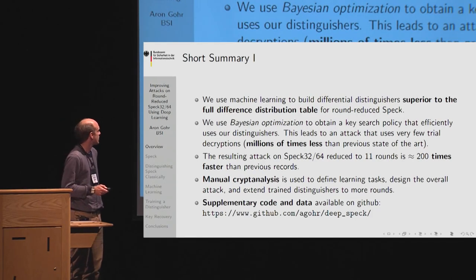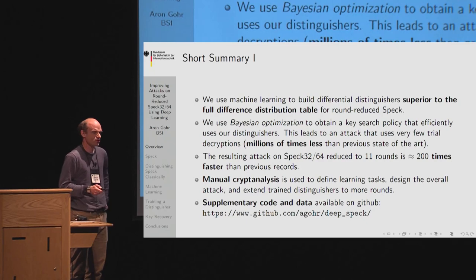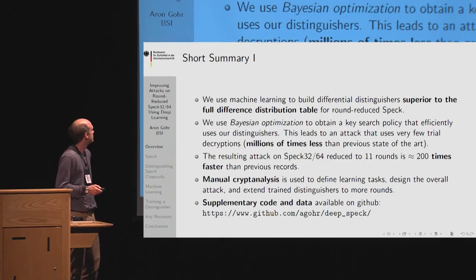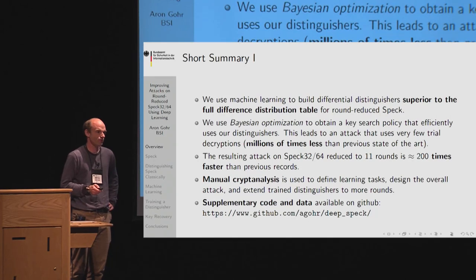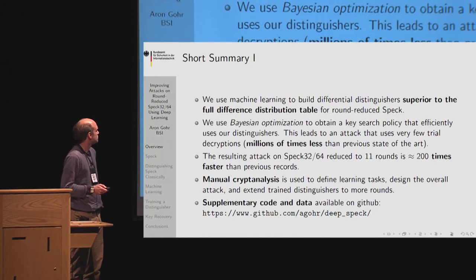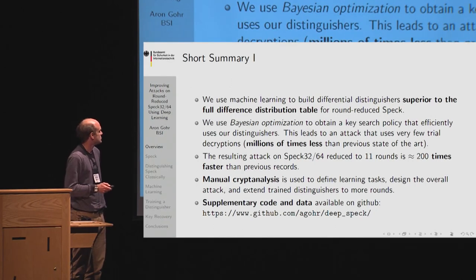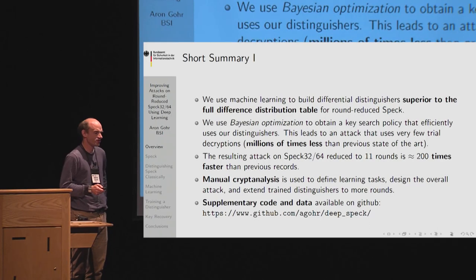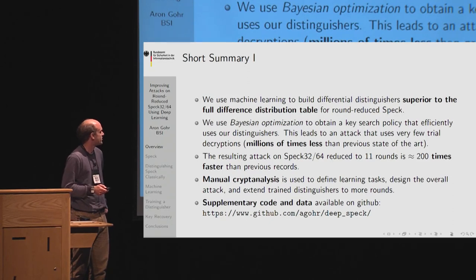The first thing we do is build differential distinguishers using machine learning for SPECK 32/64, which are superior to classical differential distinguishers — even using the full difference distribution table, which we also calculate for up to eight rounds of SPECK with one chosen input difference. The neural network-based distinguishers exploit the ciphertext pair difference instead of the distribution of differences.